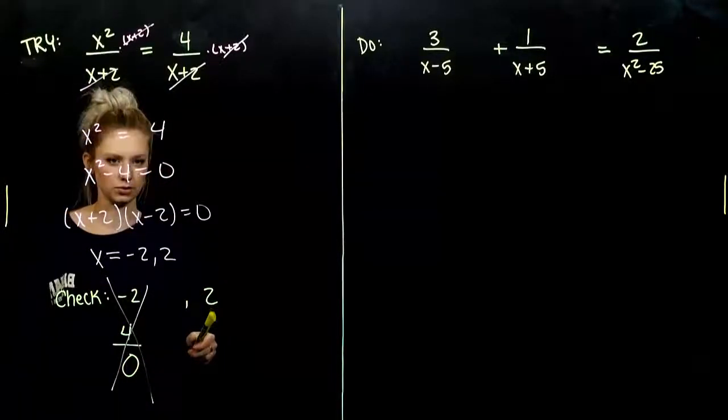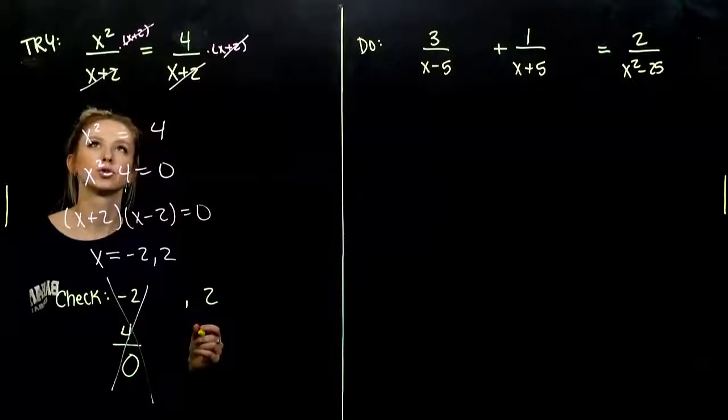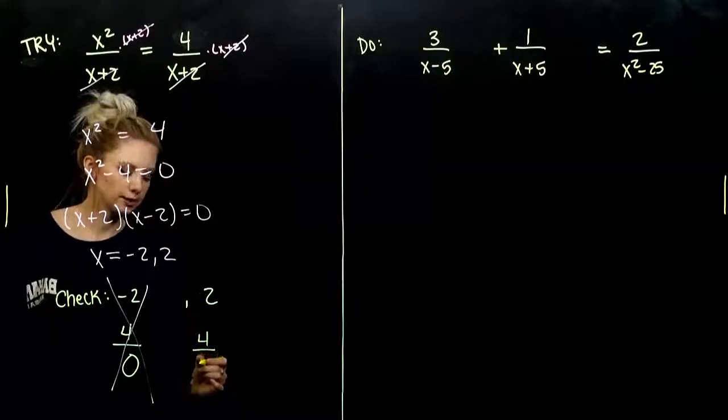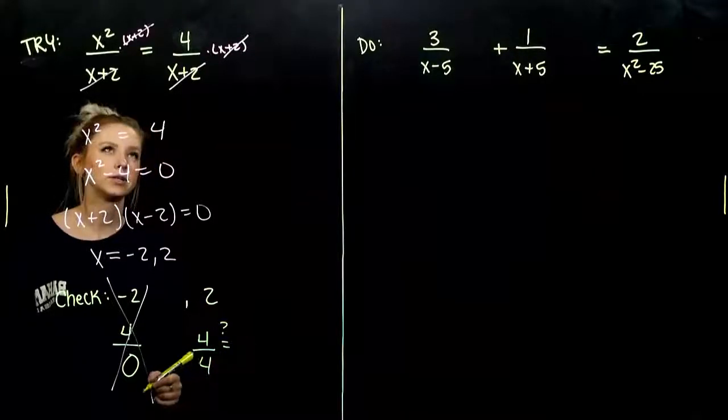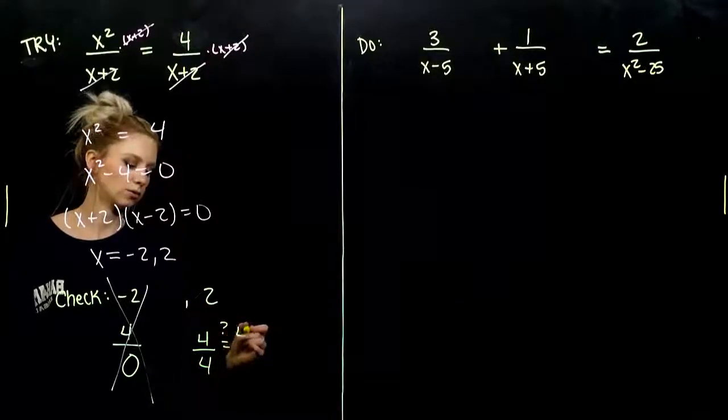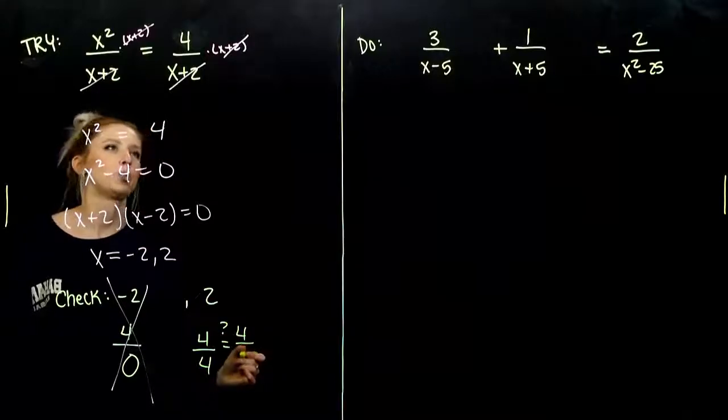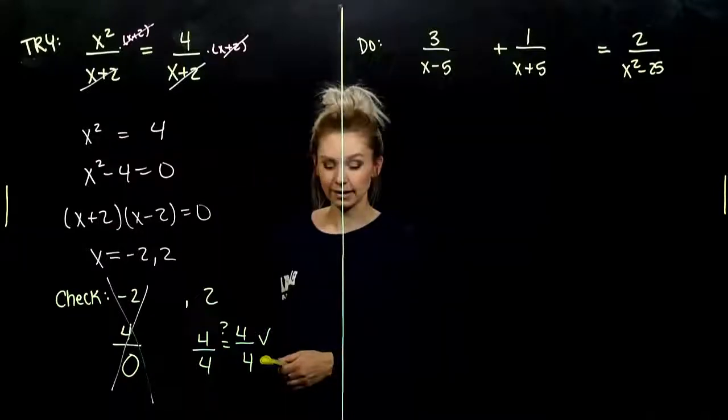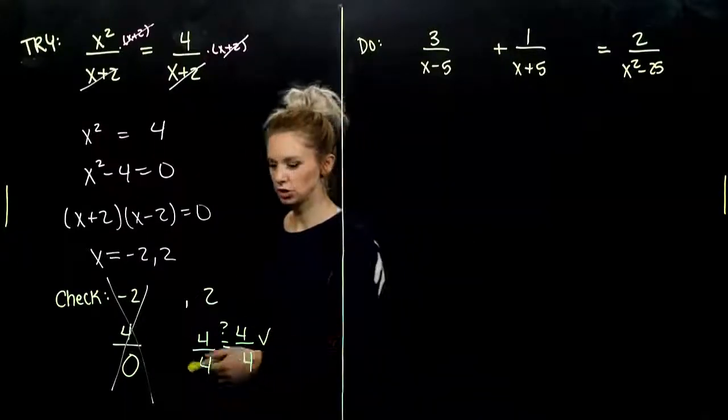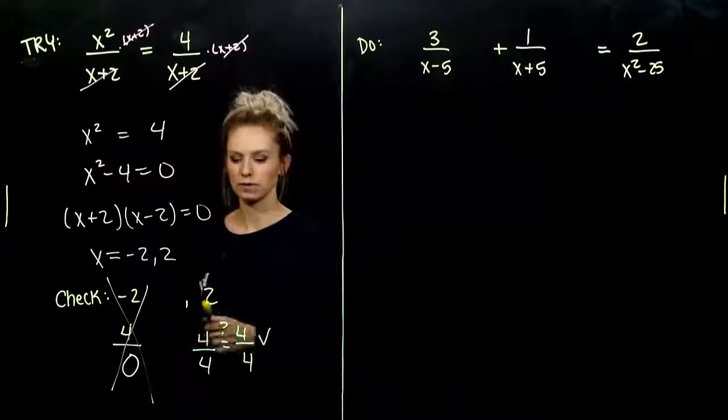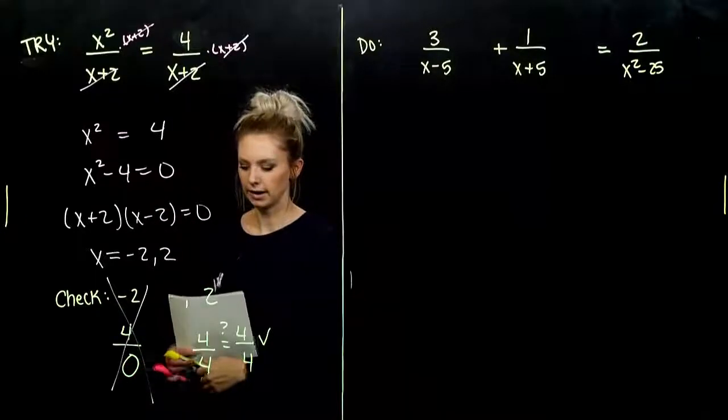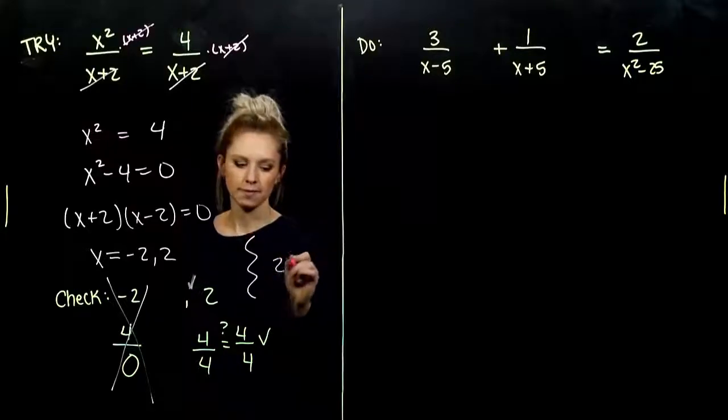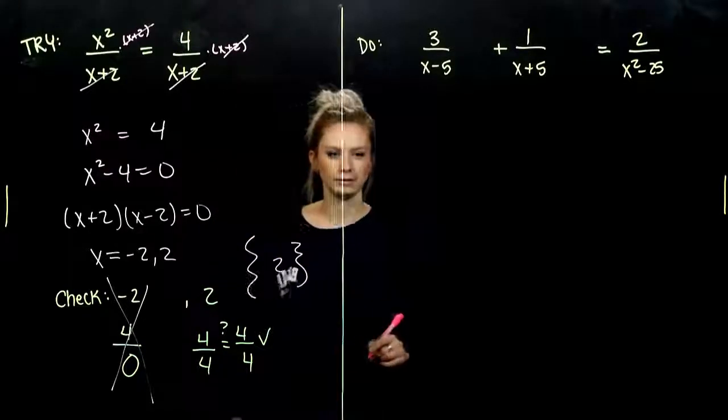When we plug in positive 2, does it make it true? So, I've got 2 squared will give me 4. And 2 plus 2 gives me 4 down below. We need to check and see if that's really equal to 4 divided by 2 plus 2, which is 4. Oh, yeah. The checks are usually that simple, but we need to be sure to check both solutions when we're dealing with a quadratic. Because in this case, we don't have two solutions. We only have one. The value we can plug in is 2.